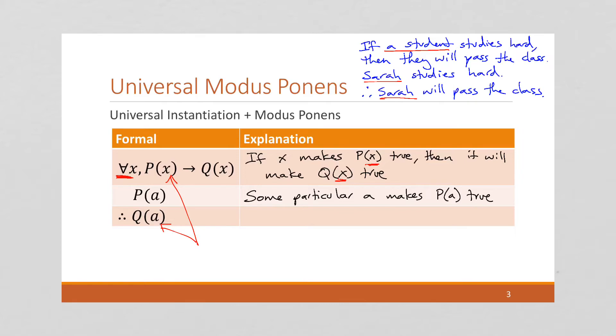So, here, P of A means some particular A makes P of A true. In our example up here, that was Sarah. And so, we can conclude, therefore, A makes Q of A true. So, this is universal modus ponens. And it allows us to use these quantifiers, in this case the for all, to say a general statement about a group. And then we can conclude specifics, we can conclude that property about a specific element in the group.